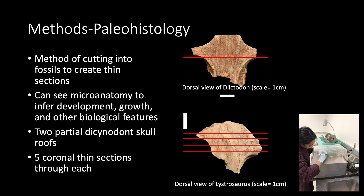In this project we have two partial Dicynodont skull roofs, which are pictured on the right. We made five coronal thin sections through each skull roof, and the red lines show approximately where the cuts are made. On the far right you'll see a picture of me cutting one of the skulls on a tile saw, showing a part of the process of how these thin sections are made.